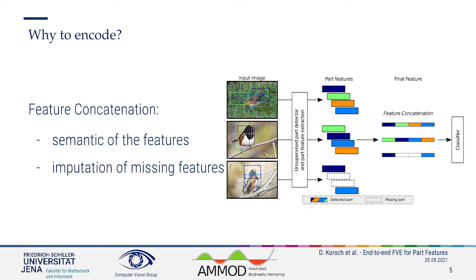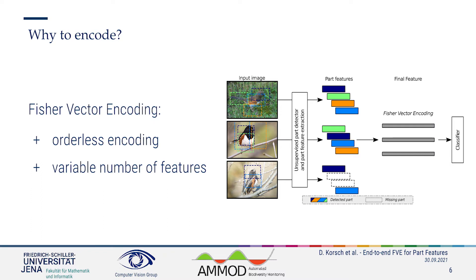The problem of using a part-based classifier was an unsupervised part detector that we cannot really ensure that the returned parts are semantically consistent. For example, if we have a part and it may be at the first position, second position, or even missing, then we have to think about imputing some features before we can pass this to our classifier. A straightforward way to solve this is to do an orderless encoding, for example a Fischer vector encoding, to ensure that we have a fixed-length unified representation able to handle the arbitrary ordering of parts and also missing parts — basically a variable number of features.